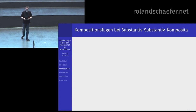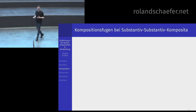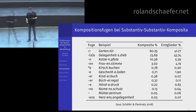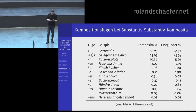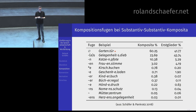Das waren die beiden wesentlichen Untertypen von Komposita, die man unbedingt unterscheiden muss. Ein formales Merkmal bei diesen Komposita sind die sogenannten Kompositionsfugen. Hier sehen Sie alle Möglichkeiten für sogenannte Verfugung im Deutschen. Man spricht gerne von Fugenelementen, wobei manchmal gerade das Fehlen eines Elements das Relevante ist, deswegen spricht man eigentlich von Verfugung. Beispiele: Gartentür – da steht nichts zwischen den beiden Substantivstämmen, Gelegenheitsdieb, Katzenpfote mit N, Frauenstimme mit Schwa und N.